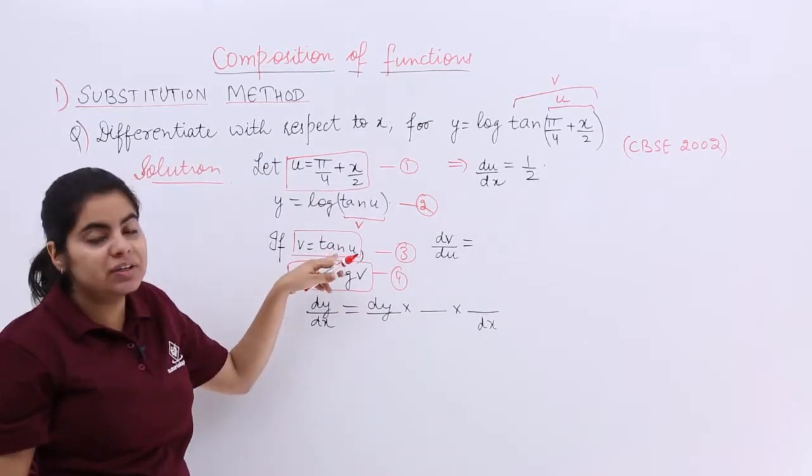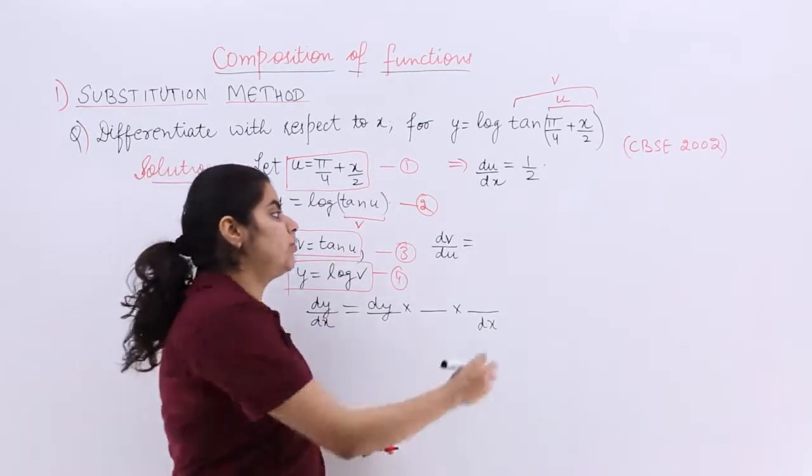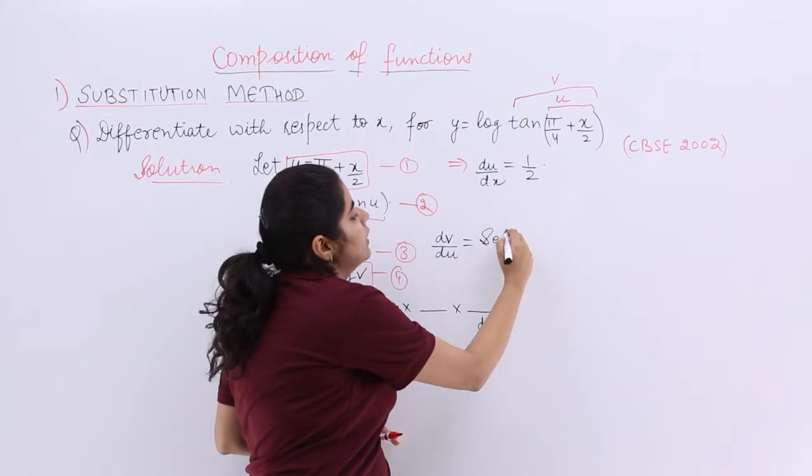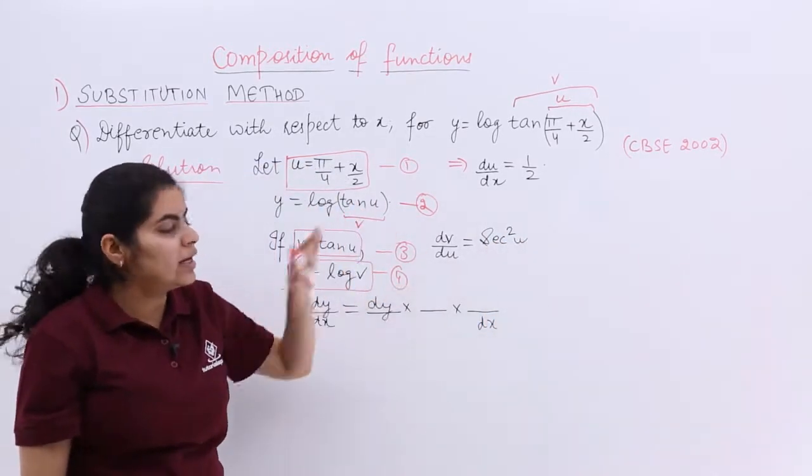Now, it is differentiate with respect to u. What is the differentiation of tan theta? It is secant square theta. So it becomes secant square u. That is one answer.